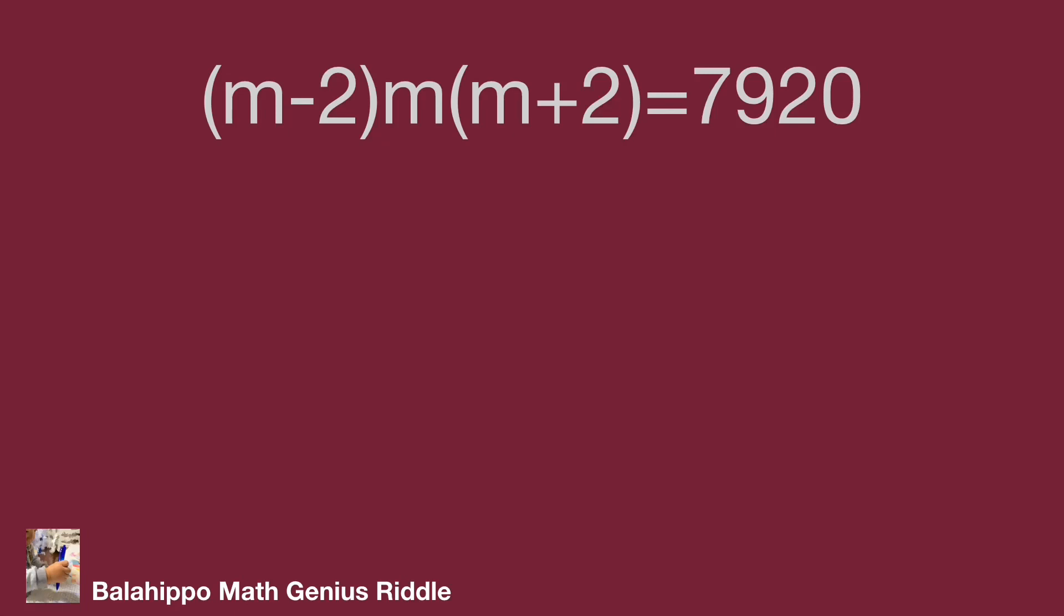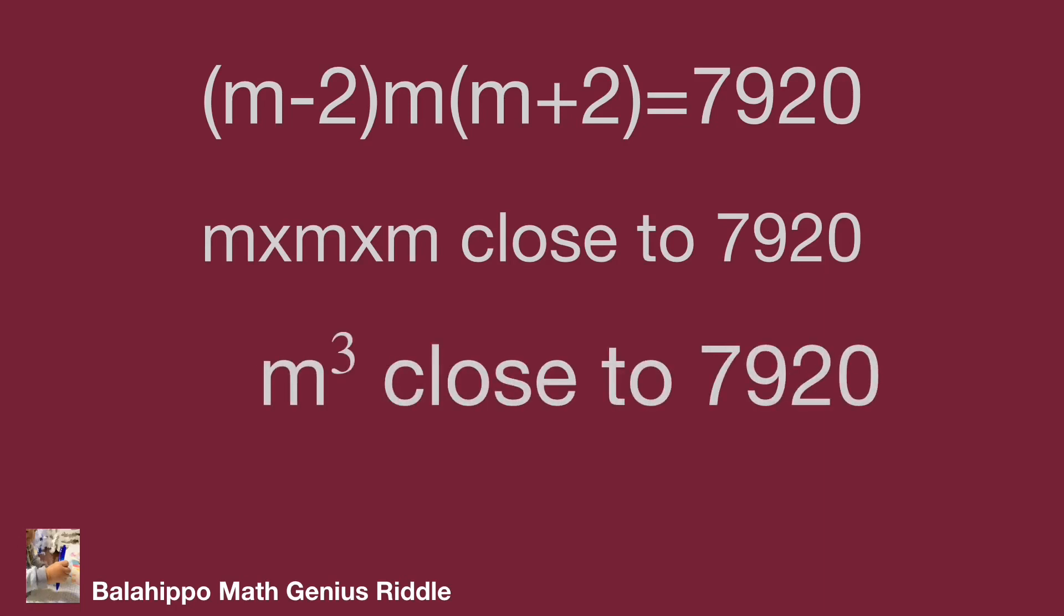But let's think of another approach. For these three quantities, we can set m times m times m close to the value of 7920. That means m cubed close to 7920.